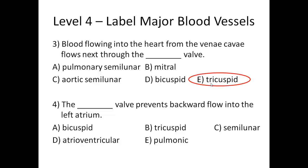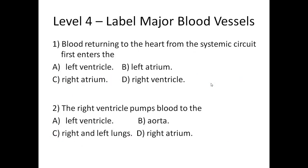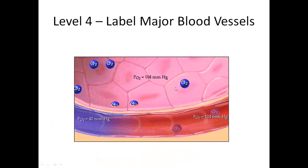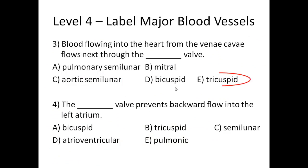One more question: the something valve prevents backward flow into the left atrium. Going back to our diagram, we need a valve between the atrium and the ventricle. It's this valve that's preventing the backflow, because remember, these valves are one way — blood has to go down this way. If it goes back, that's regurgitation and you get heart murmurs. So this is the valve we're looking for: the left AV. But we know there could be other names in the choices.